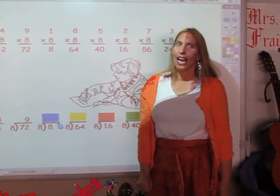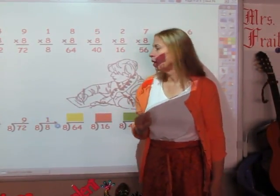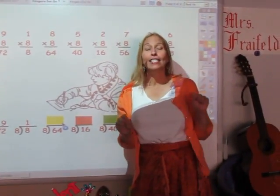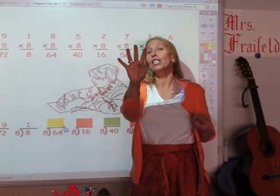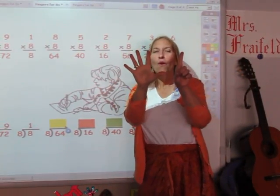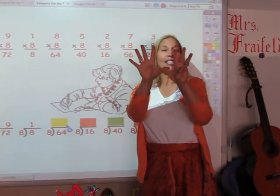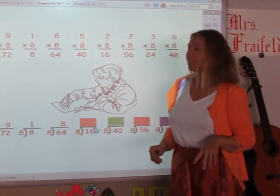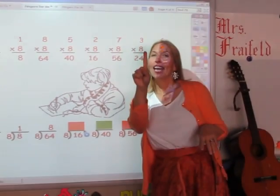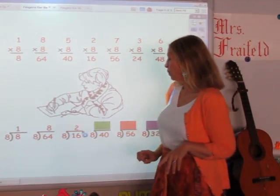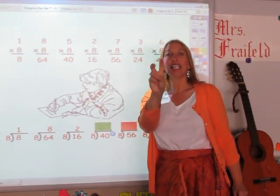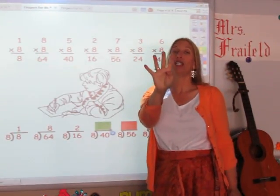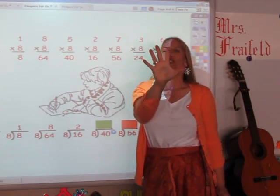I'm singing the eight song until I get to eight. Eight. The answer is one. I'm singing the eight song until I get to 64. 8, 16, 24, 32, 40, 48, 56, 64. The answer is eight. I'm going to sing the eight song until I get to 16. 8, 16. The answer is two. I'm going to sing the eight song until I get to 40. 8, 16, 24, 32, 40. And the answer is five.